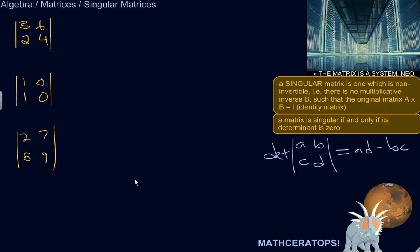Hey, so a singular matrix is one that is non-invertible. You can't invert it. And what that means is there is no multiplicative inverse such that if you multiply it by the original matrix, the singular one, that you'd get an identity matrix.